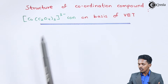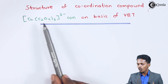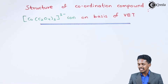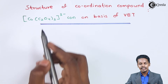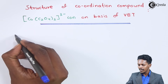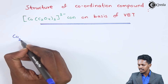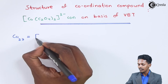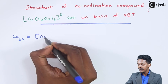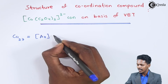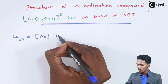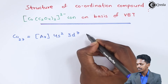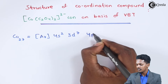Let us talk about the structure of tri-oxalato-cobalt ion. Cobalt has an atomic number of 27. So therefore we could write the electronic configuration as [Ar]18, 4s2, 3d7, 4p0.